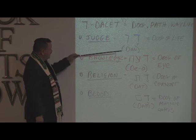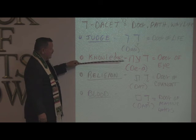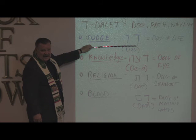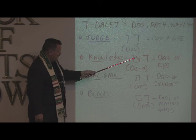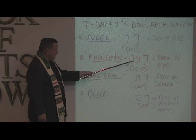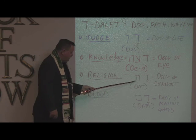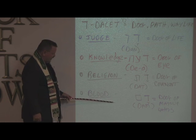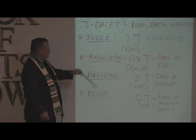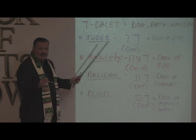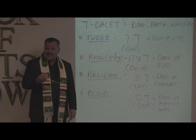So in our review today: Judge — Dan — means the door of life. Let the Word of God judge your life; let Him be your judge. Knowledge — the door of covenant allows you to see true knowledge. Religion — the door of covenant where you see the cross. And blood — the door of massive waters. That's our study with Dalet. Whenever you see this letter, remember: it always has something to do with covenant. Then look for the hidden meaning.